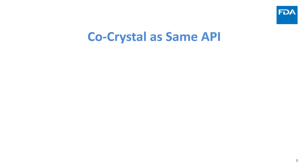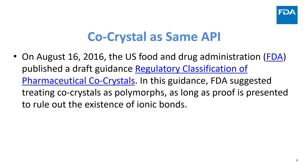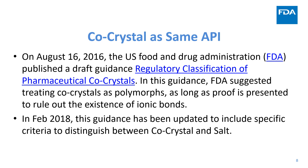To address the co-crystal as the same API, FDA published a draft guidance in 2016 where FDA suggests treating co-crystals as polymorphs, as long as proof is presented to rule out the existence of ionic bonds. Two years later, in February 2018, this guidance was updated to include specific criteria to distinguish between co-crystal and salt. The following slides will discuss this criteria in detail.